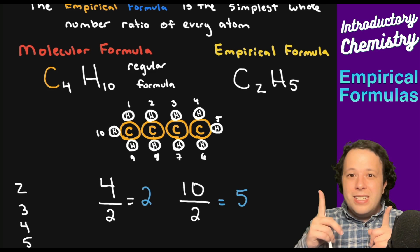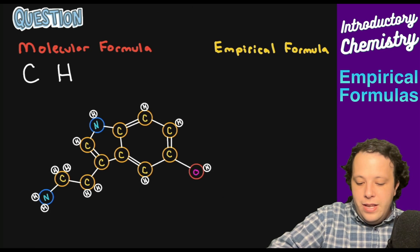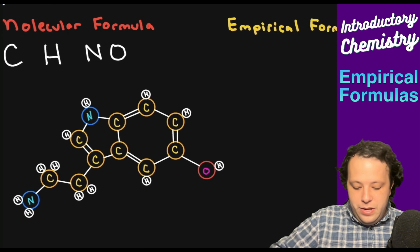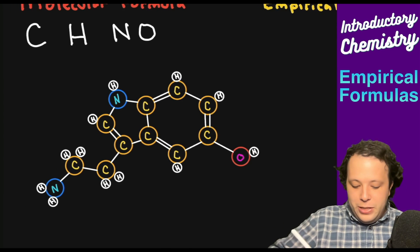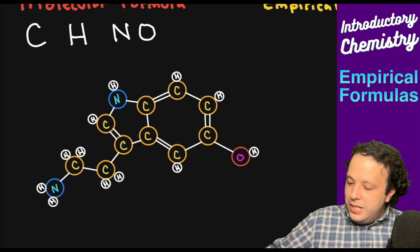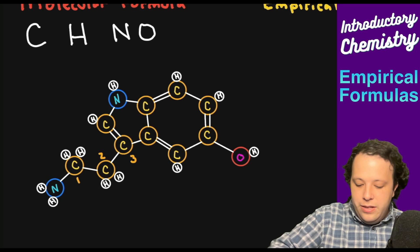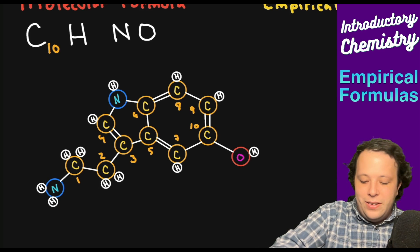Let's try another one with H, N, and O, which all have their own different colors. Let's first count all the carbons, which are the ones in orange and yellow. When we do that, we can see we have ten carbons all around our compound.